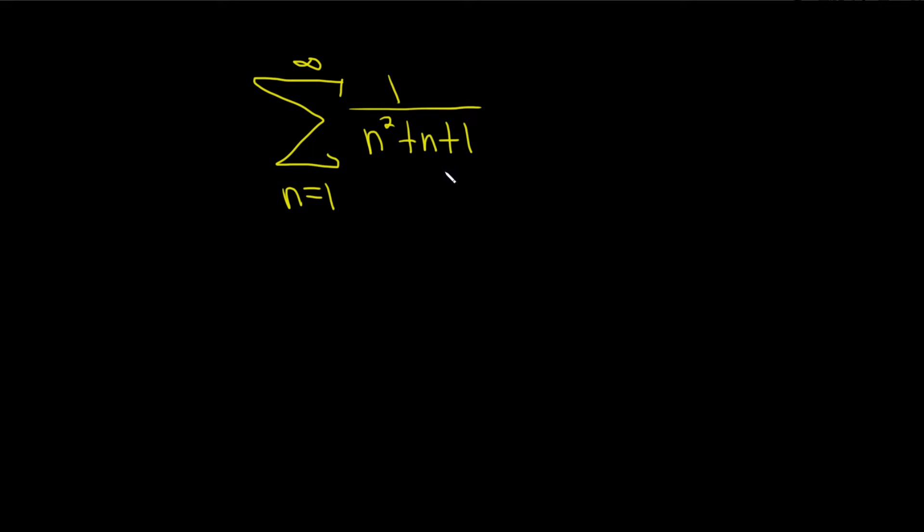Before you do a problem like this, you have to have a little bit of intuition. First note, if you have 1 over n squared plus n plus 1, when n is really, really big, you can pretty much ignore the n and the 1. This is approximately equal to 1 over n squared.